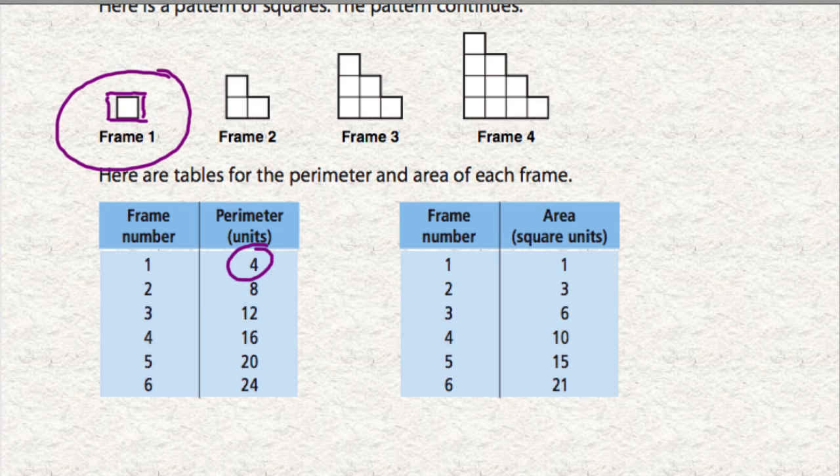So that's why this four is appearing in the table. And for frame two, there's a pattern. We're going to add two squares on either side of the first square. So the perimeter is only around the outside. So one, two, three, four, five, six, seven, eight. So the next number is eight.